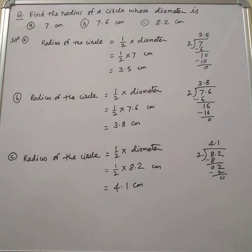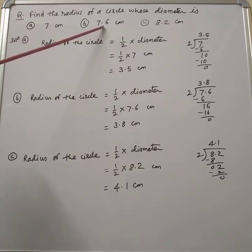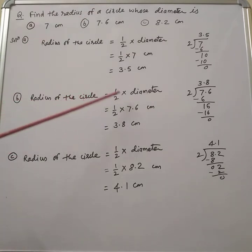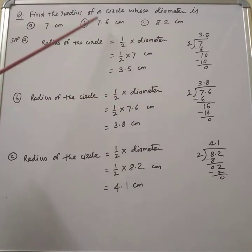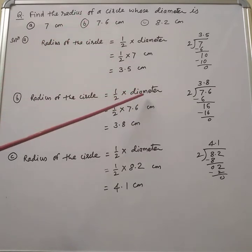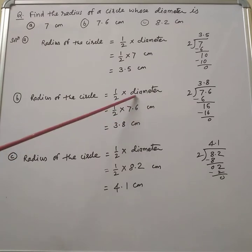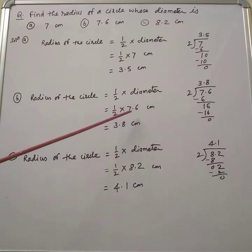Now the second example: the diameter is given as 7.6 centimeters, and we have to find the radius of the circle. The radius of the circle is equal to half into diameter. In place of diameter, we write 7.6, so it is half into 7.6 centimeters.